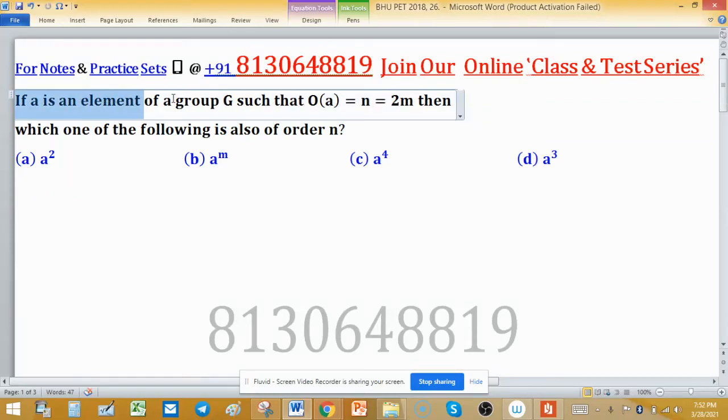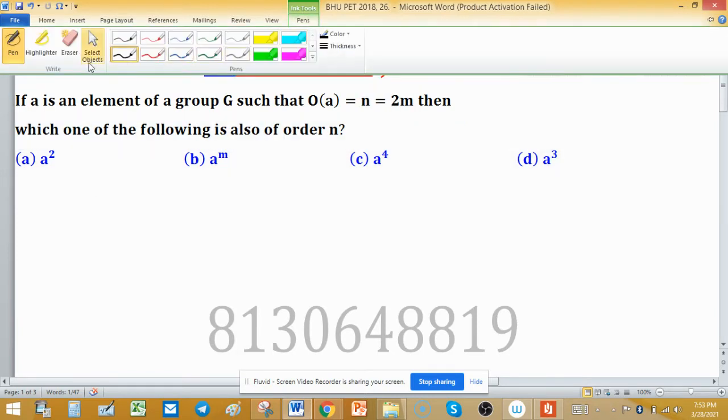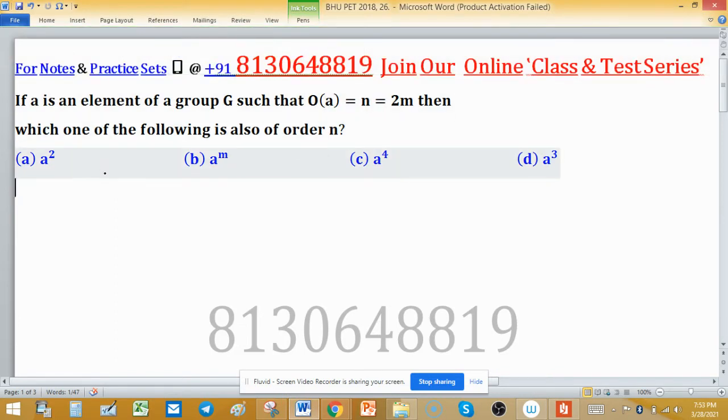If A is an element of the group G such that order of A is N and N is equal to 2M, then which one of the following is also of order N? We have to find which element as given have same order as A.